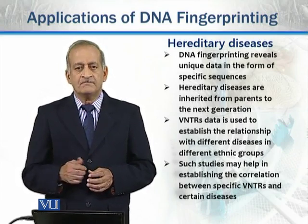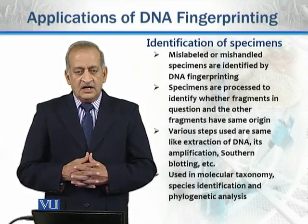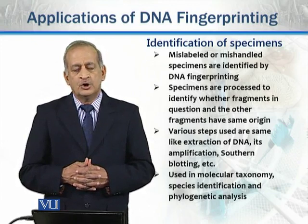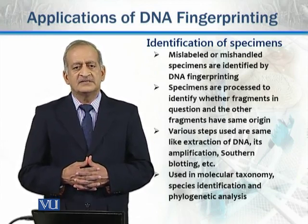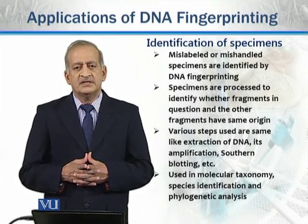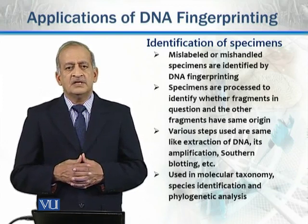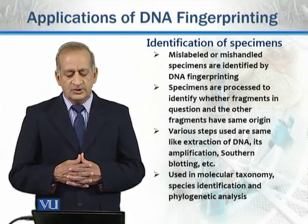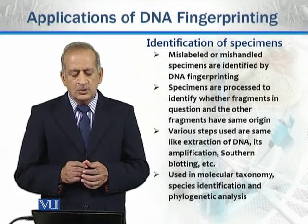The specific nucleotide sequence of VNTRs can be correlated with different diseases. Similarly, the specific sequence of VNTRs can be used to identify specimens of different individuals — for example, if an accident, bomb blast, or natural hazard occurs, we can identify specimens of related individuals to determine whether they belong to the same person or different persons. For scientific purposes, correctly identifying specimens is essential, and mislabeled or mishandled specimens can also be identified using this technique.